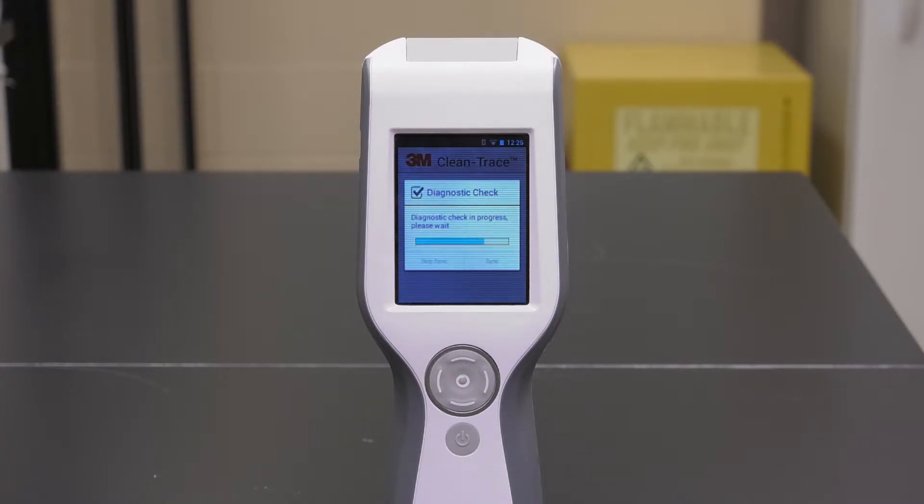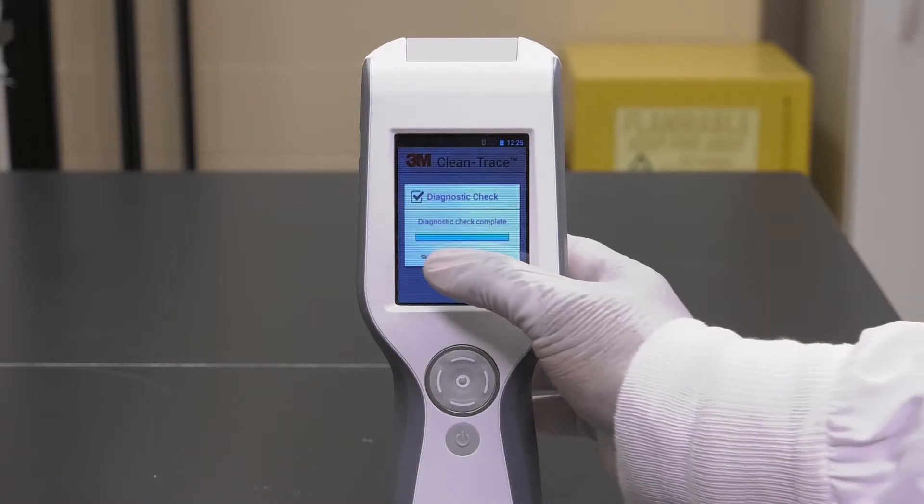During the diagnostic check, the progress bar is visible. When it's done, you will have the options to skip sync or sync. If you are ready to synchronize your luminometer, tap sync. Otherwise, tap skip sync.